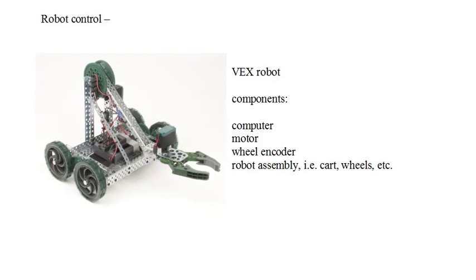The graphic shows a VEX robot. The components of the robot that we will model are: first, the computer, which is onboard the robot and used to control the motors. The robot is run in competitions in both remote-controlled and autonomous operation. We will model autonomous operation only and write a MATLAB version of the onboard control program. We will model only motion in a straight line, and our control program will consist of exactly one line of code. We'll model the motor from input voltage command to output torque, and also the wheel encoder — a robot can be equipped with a wheel encoder that the computer reads to determine wheel position. And we'll model the dynamics of the robot cart itself.